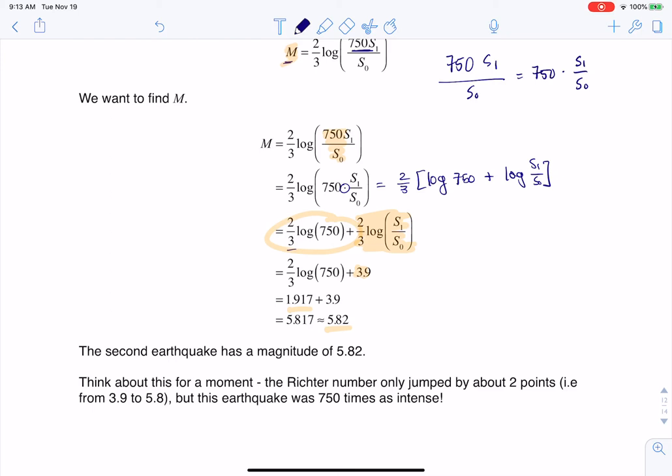But I did want us to think about this for a moment. The Richter number only jumped by about two points. It went from 3.9 to 5.8, but this earthquake was 750 times as intense.